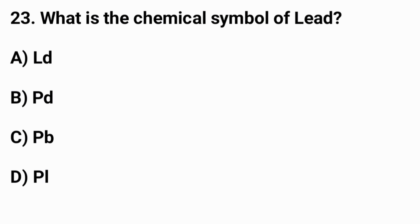Question number twenty-three: What is the chemical symbol of lead? The right answer is option C — Pb.